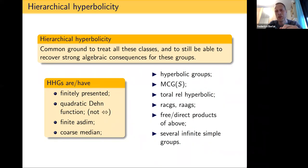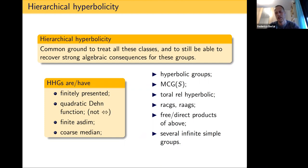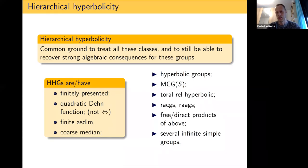In stark contrast with the hyperbolic world, among groups acting on CAT(0) cube complexes you find several instances of infinite simple groups. In the hyperbolic world, the simple hyperbolic groups are the finite simple groups — if you have an infinite non-virtually-cyclic hyperbolic group, there will be a normal infinite subgroup with infinite quotient, so it's far from simple.